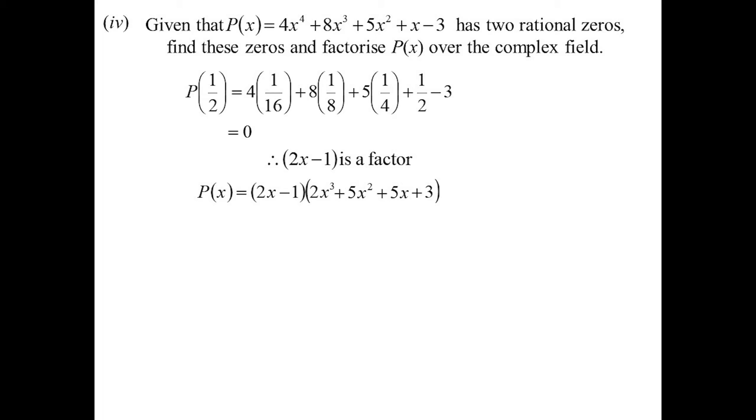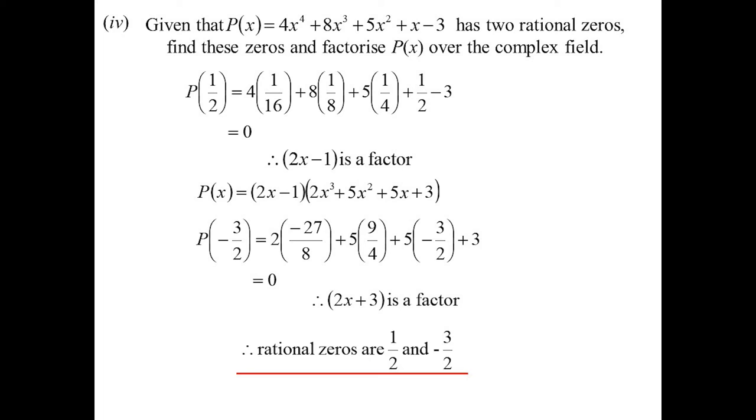But we know that cubic has to have a rational solution because overall there was 2. We've only found 1. So again, 3 is a prime number. What one will I try? Minus 3 on 2. Yes, that worked. So I now know 2x plus 3 is another factor. So the rational zeros, I've found those. We've got half and minus 3 on 2. But we still have to factorise the whole thing.